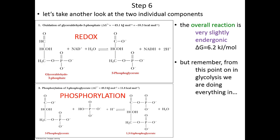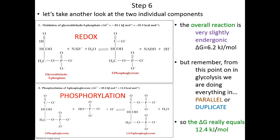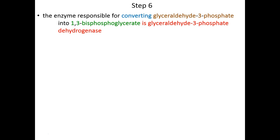Keep in mind that everything we're doing, we're doing in parallel. What we do in step 6 to one GAP molecule, we're also doing to another. That means step 6 in total actually has a delta G of positive 12.4 kilojoules per mole — we've simply doubled the 6.2 to capture the fact that we've done this to two GAP molecules. We'll see later when we talk about the energetics of glycolysis how and why these endergonic reactions are driven forward.